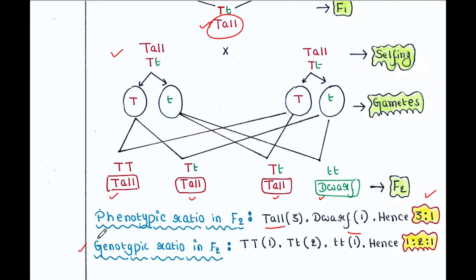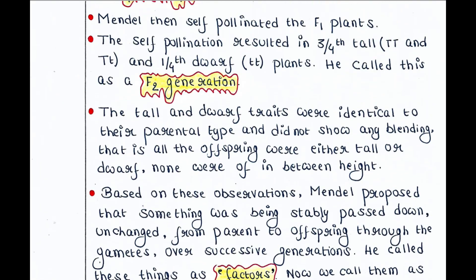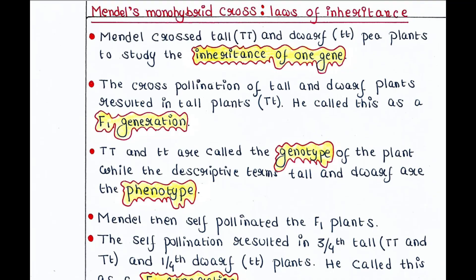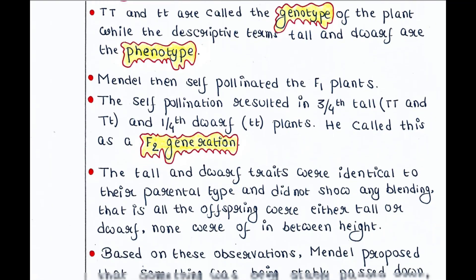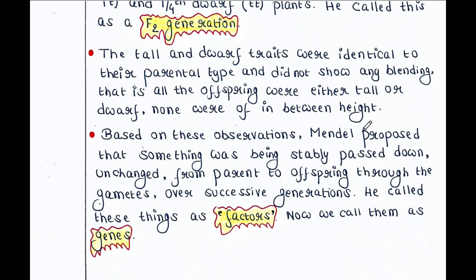The genotypic ratio in F2 was 1:2:1 — that is, 1 TT, 2 Tt, and 1 tt. Based on these observations, Mendel proposed that something was being steadily passed down, unchanged from parent to offspring through the gametes, over successive generations. He called these things factors; now we call them genes.